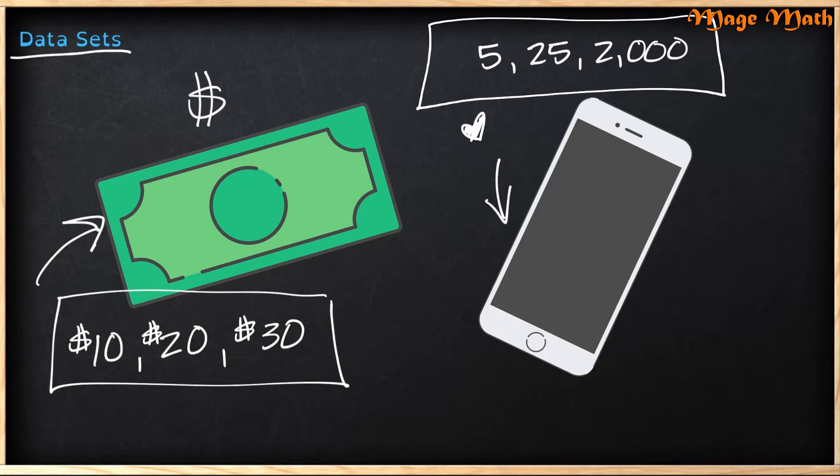Again, a data set is just a group or collection of numbers that relate to a particular object. In this case, we're talking about likes on social media. Now that we understand what a data set is, let's look at the parts of the data set. So first, we need to create a data set. For my data set, I asked some friends how many slices of pizza they would like.